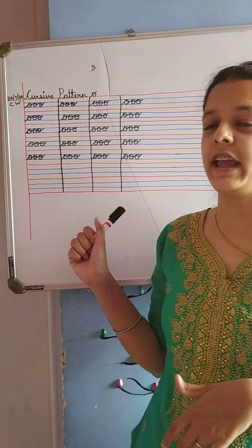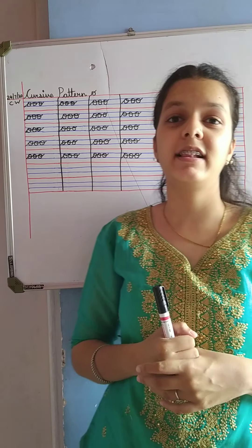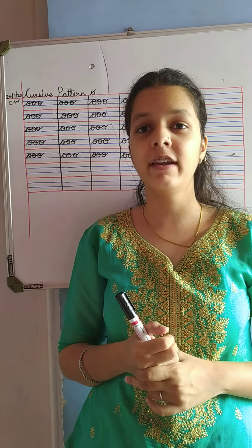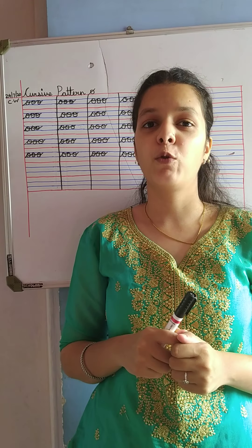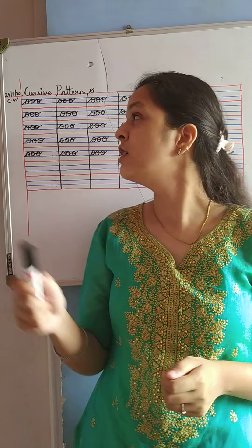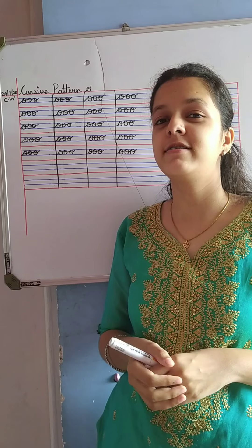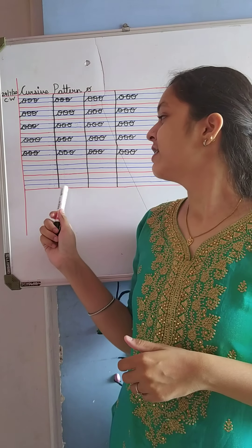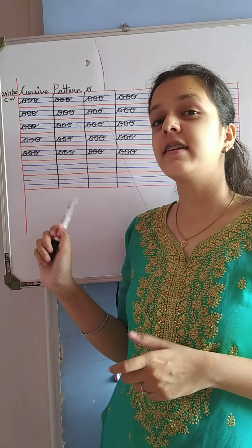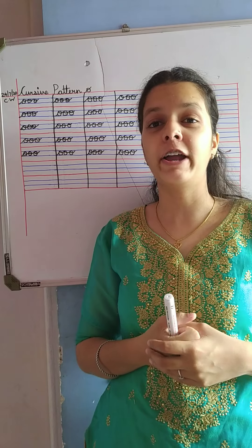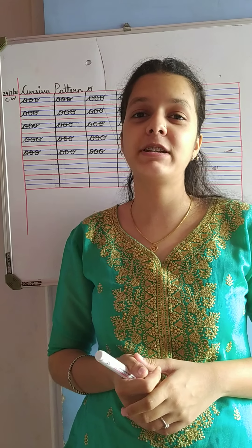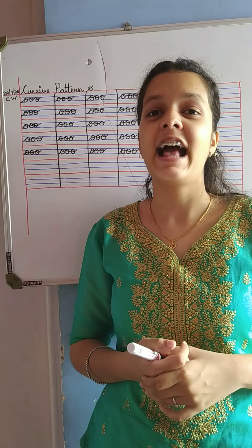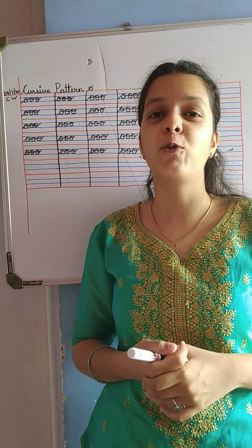So, we have learnt today cursive pattern letter O. This is your today's homework. What you're going to do is write this in your CW also and for your homework also. Do not forget to comment your name in the comment box, and do your homework regularly.